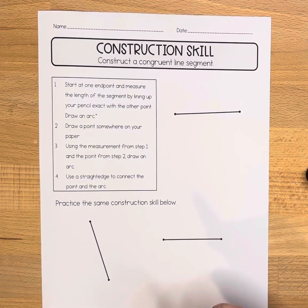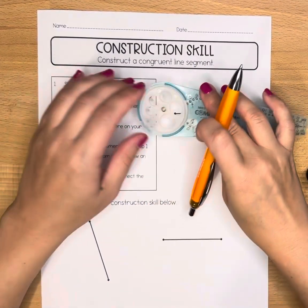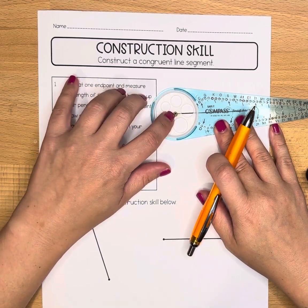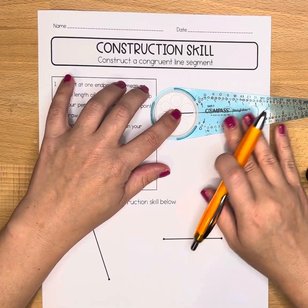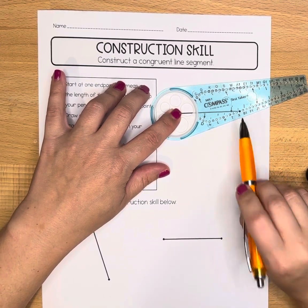We're going to start at one endpoint and measure the length of the segment by lining your pencil exactly with the other point. When we do that, we're going to draw an arc. I have my starting point of my compass on one endpoint, and I'm finding on my compass something that lines up exactly with the other.